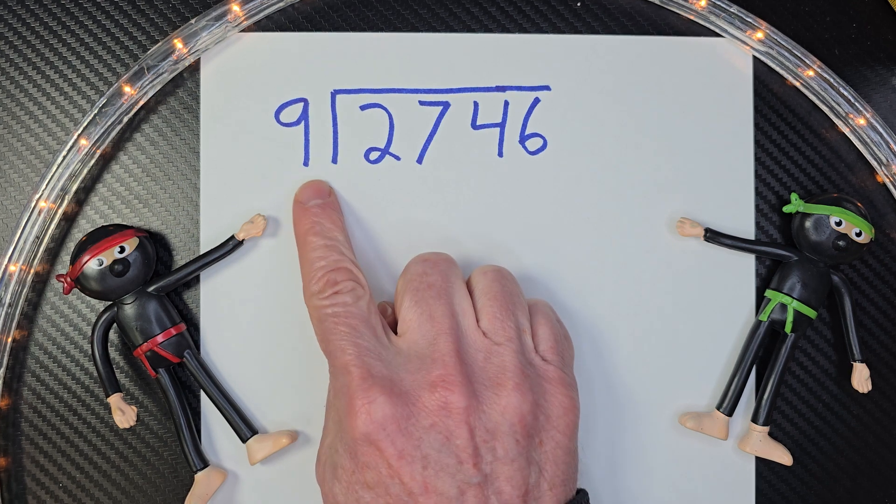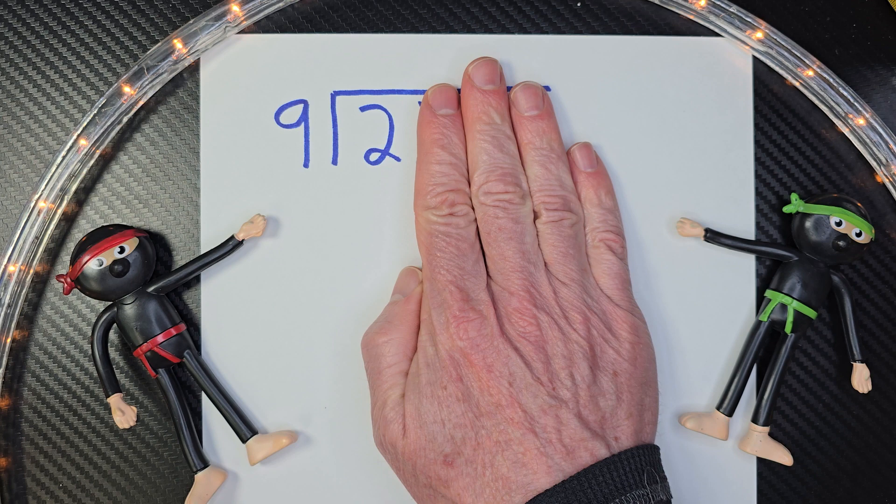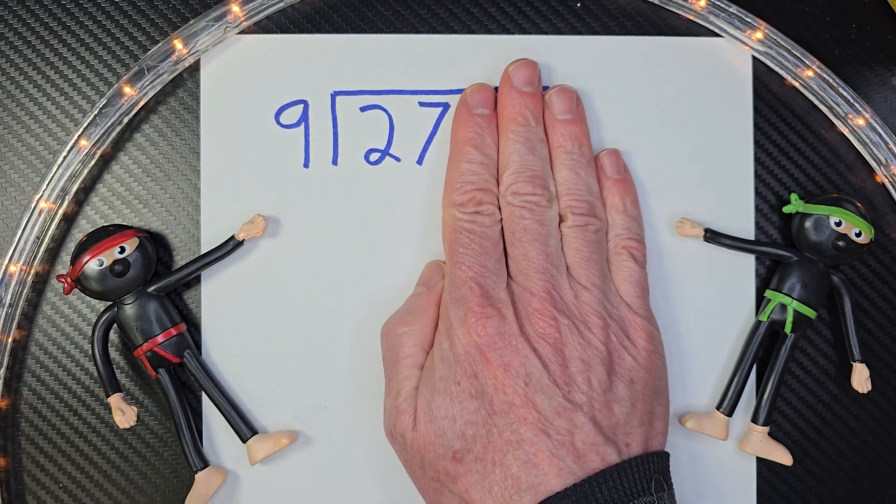So first of all, how many times can I put 9 into 2? We can cover this up right here. We just can't do it. So then we need to move over to the next number.